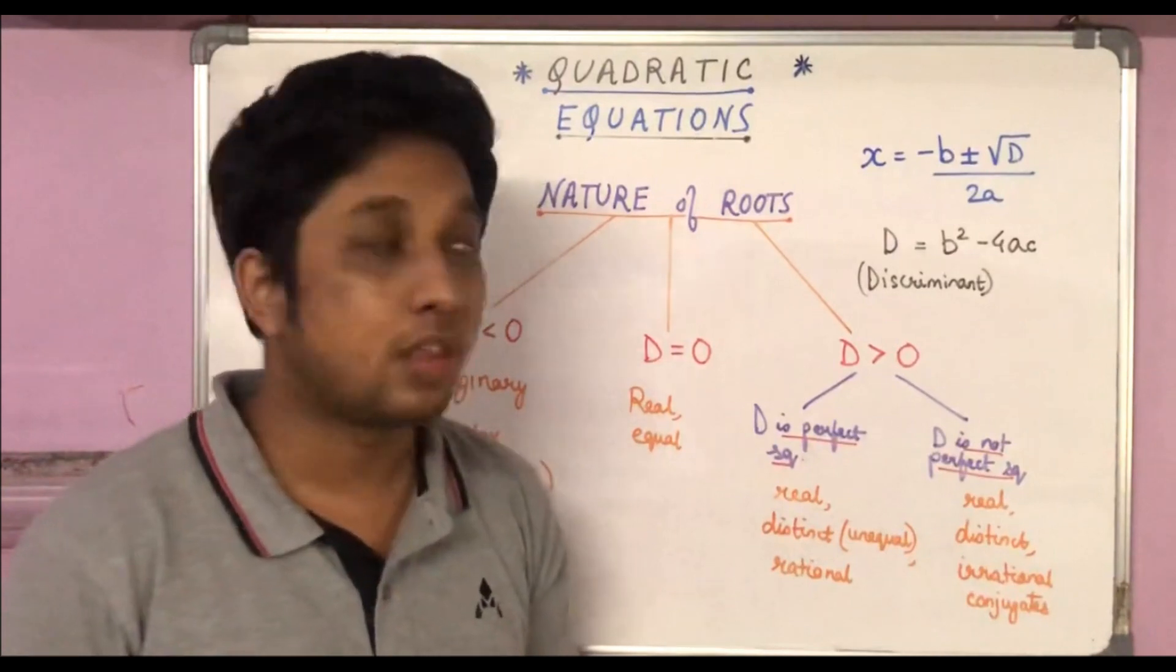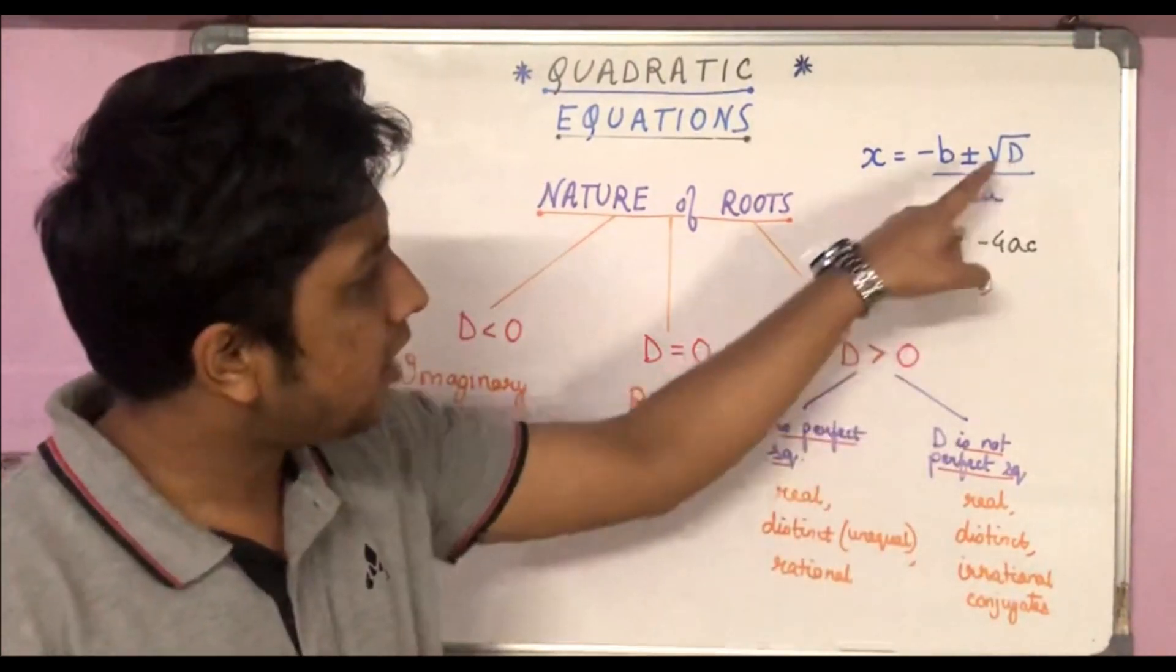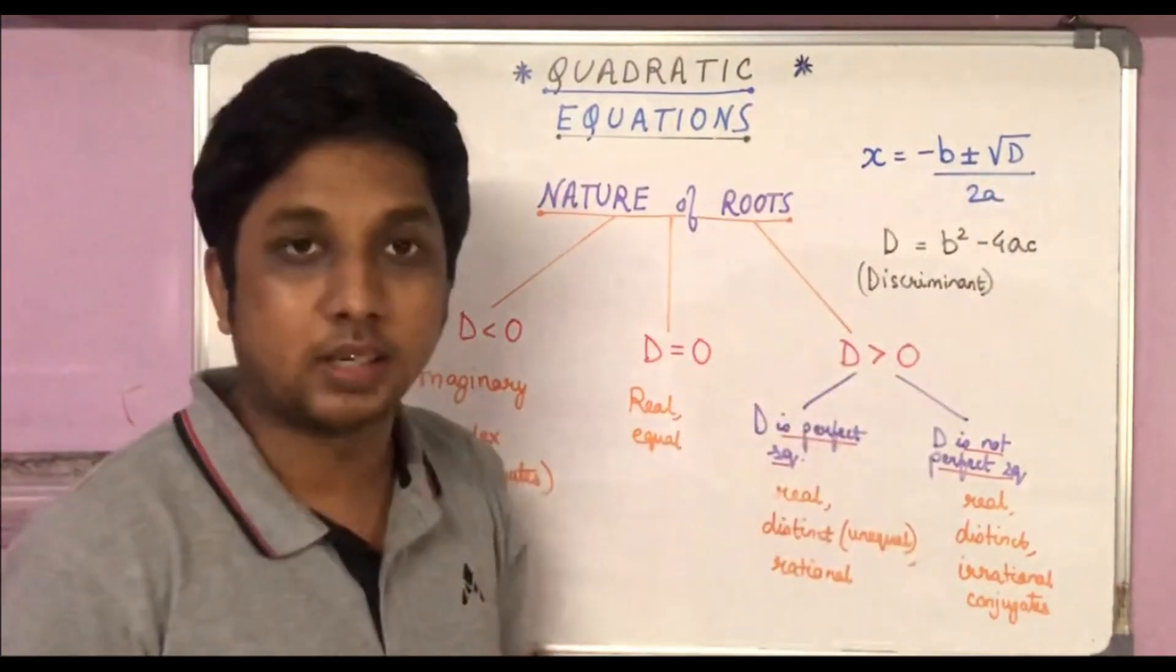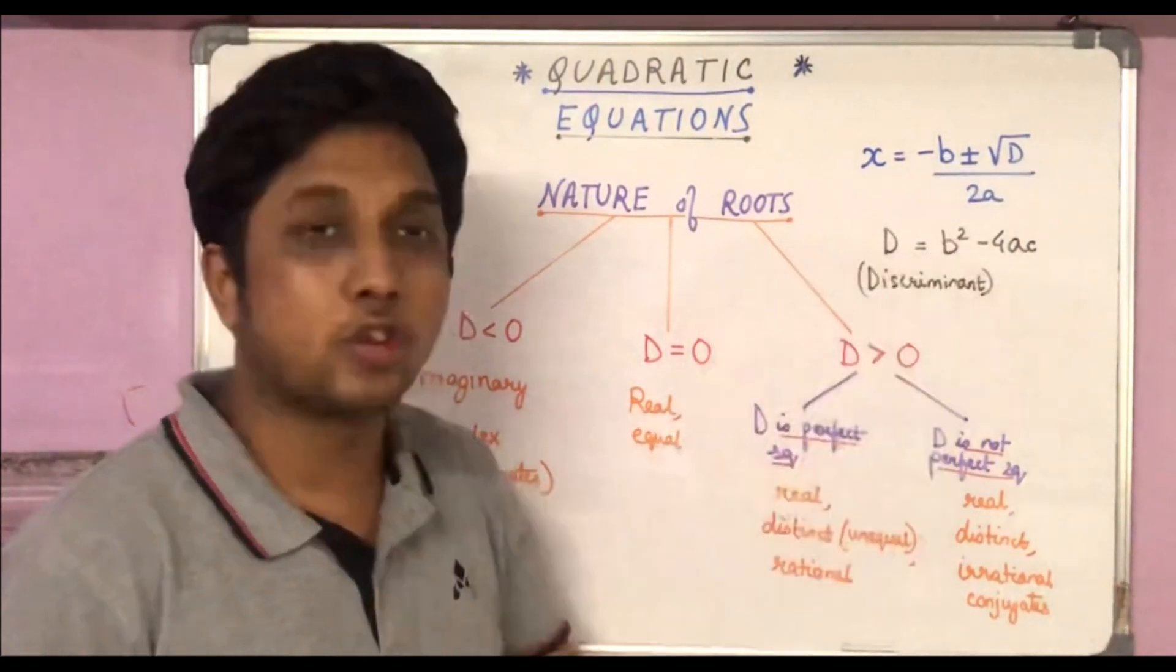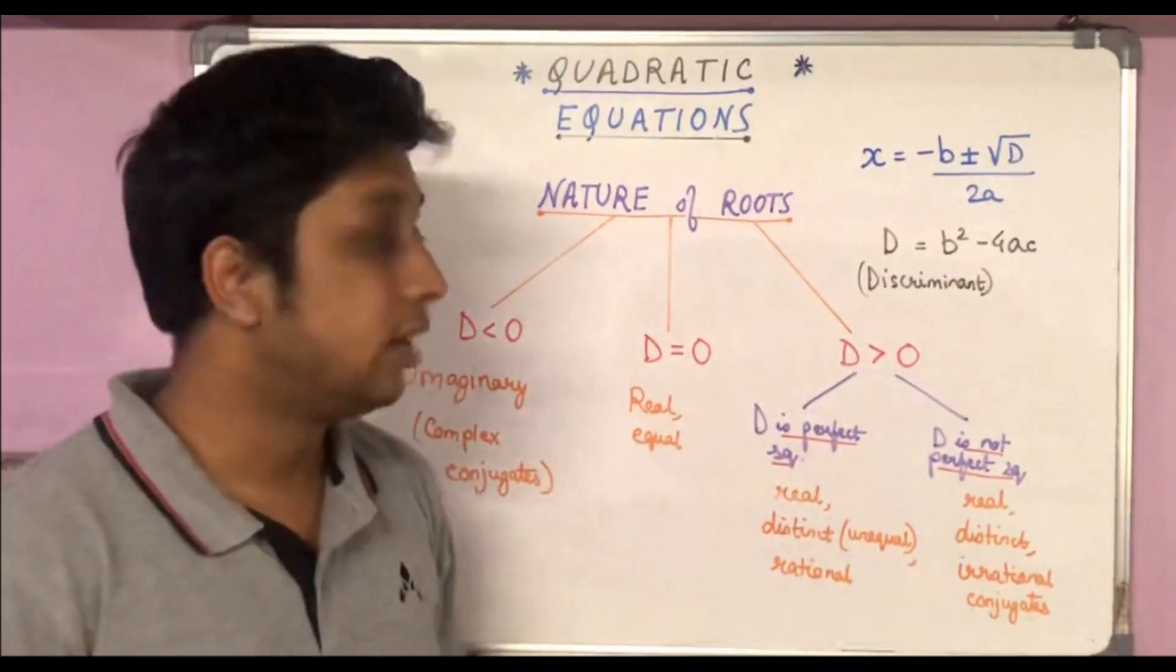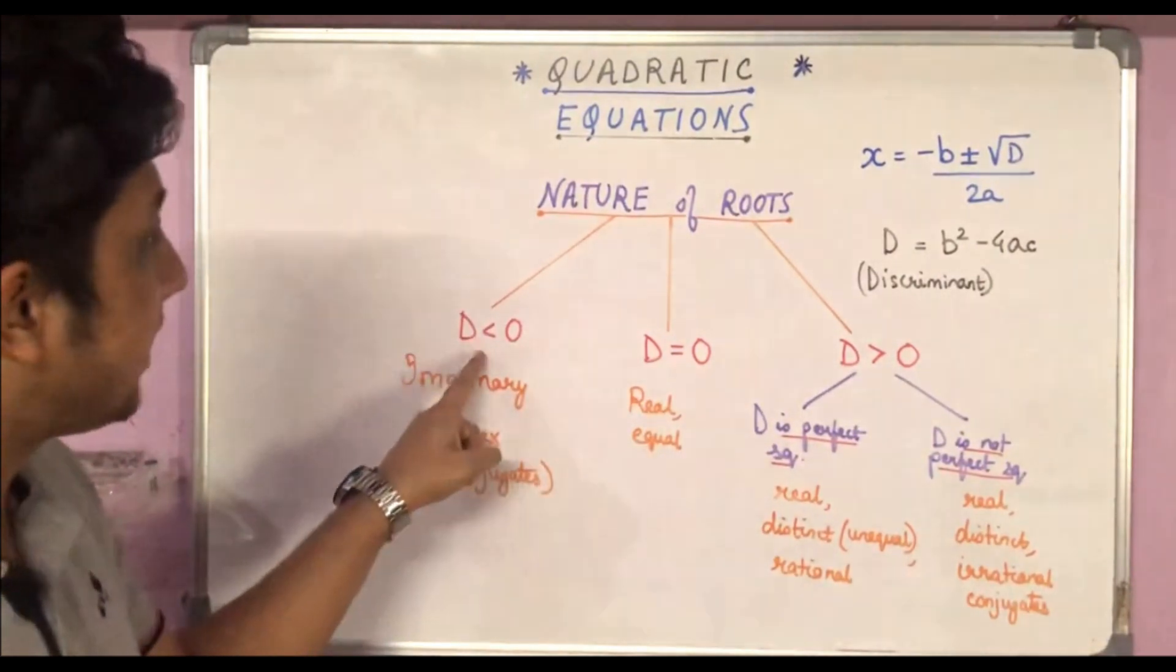Now D equals b square minus 4ac, that is the discriminant, and everything depends on this D. What will be the nature of the roots depends on this D. Now depending on the value of D, whether D is less than 0, equal to 0, or greater than 0, we can have different types of roots.